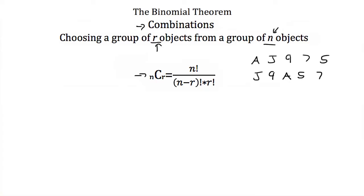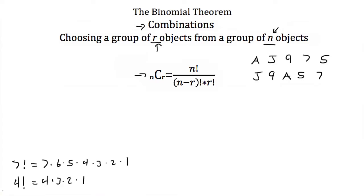If you're not familiar with the factorial sign — this exclamation point — if you were told to find seven factorial, that's equal to seven times six times five times four times three times two times one. If you were told to find four factorial, you would take four and multiply it by three, then two, then one. Whatever number is followed by the factorial symbol, you multiply it by every integer down to one. A special rule: zero factorial is always equal to one.